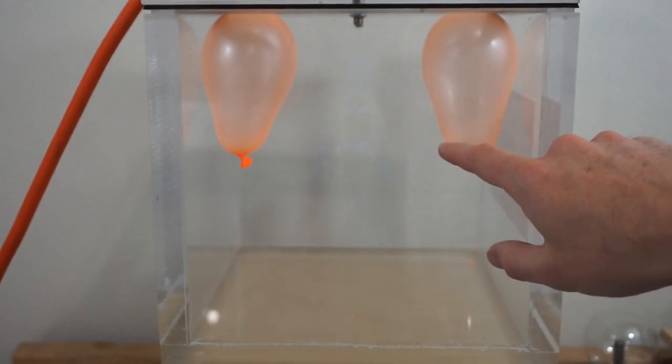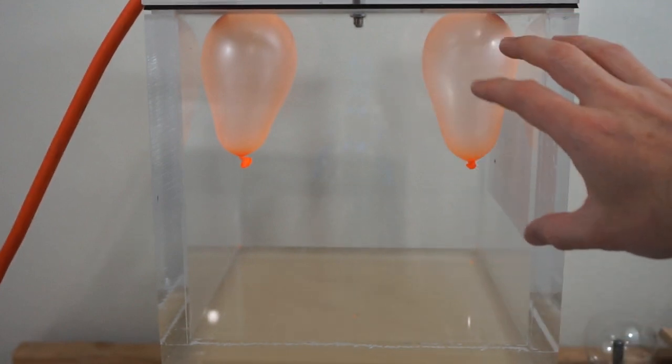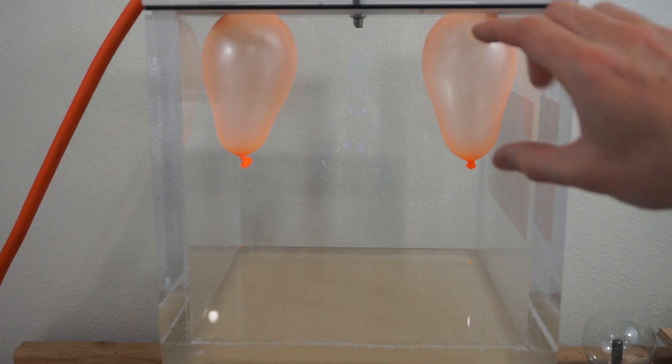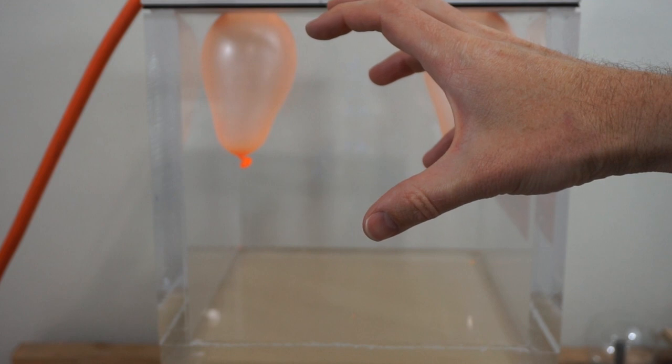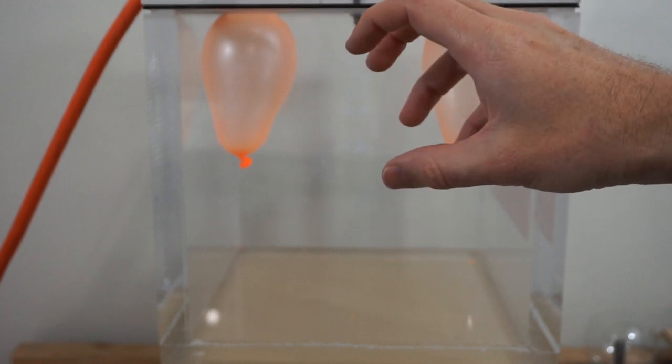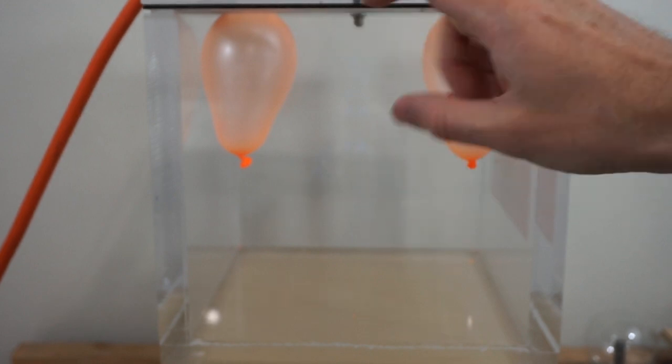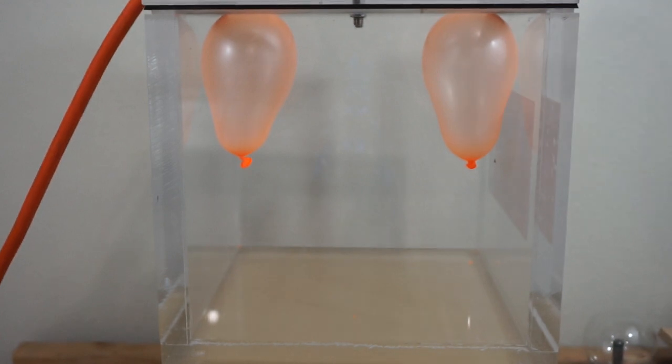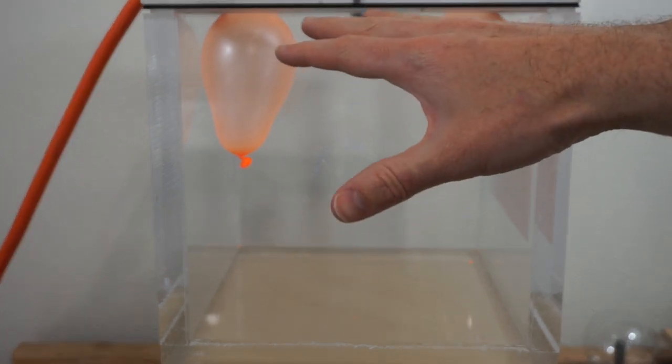And so when I turn on my vacuum chamber, the balloons will expand and what I'm going to try to do and hope for is that they'll expand but the balloon will keep it pressurized enough so that the outside air will be less dense than the helium inside of it. And at that point the helium balloon should fall.